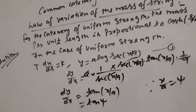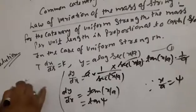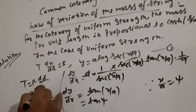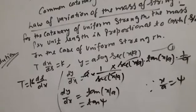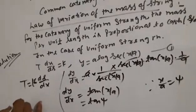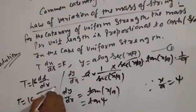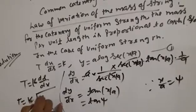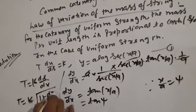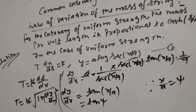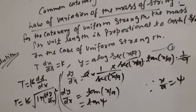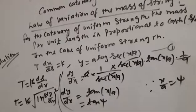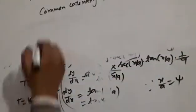So dy/dx is equal to tan(x/a). Let t equal to ds/dx. Then t equals k times the square root of 1 plus (dy/dx) squared.